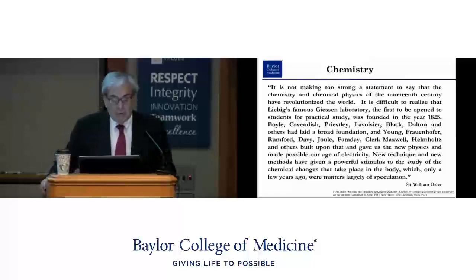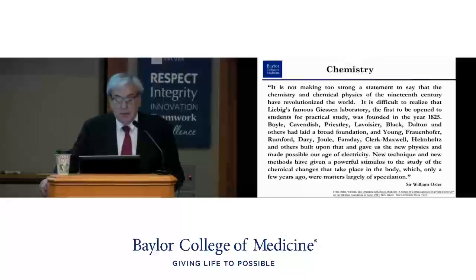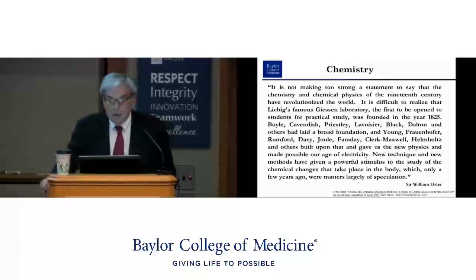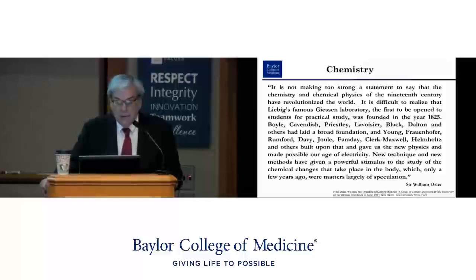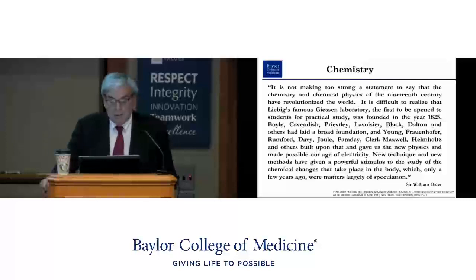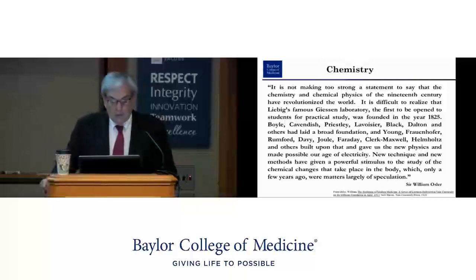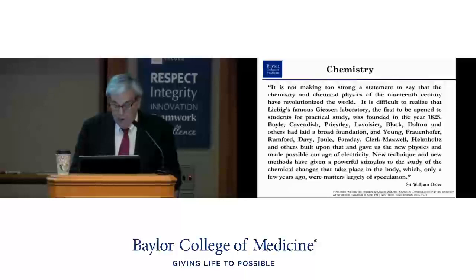Osler discusses chemistry in his final chapter: 'It is not making too strong a statement to say that the chemistry and chemical physics of the 19th century have revolutionized the world.' He mentions Liebig's famous Giessen Laboratory, founded in 1825, and credits Boyle, Cavendish, Priestley, Lavoisier, Black, Dalton, and others for laying the foundation, with Young, Faraday, Helmholtz, and Maxwell giving us the new physics and the age of electricity. New techniques gave a powerful stimulus to study of chemical changes in the body, matters that only years ago were largely speculation.